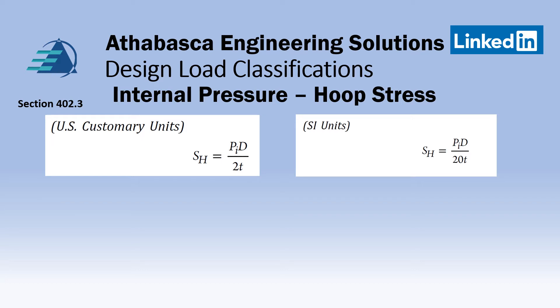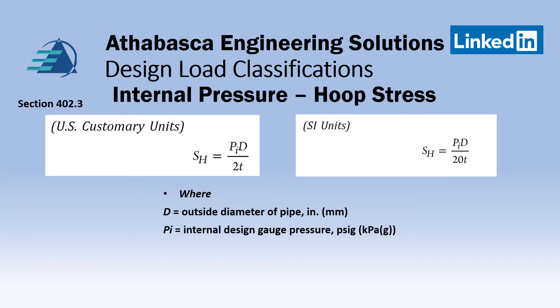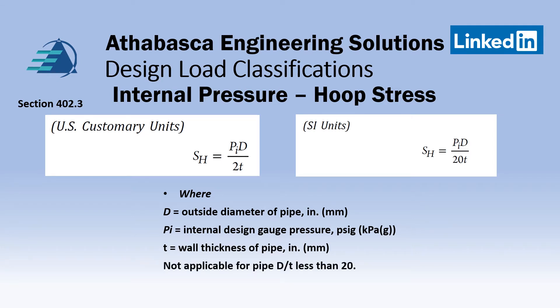Section 402.3 defines hoop stress from classical equations as the outside diameter of the pipe times the internal gauge pressure, divided by the wall thickness, divided by two. Two equations are shown — one for customary units and one for SI units. Note that these equations are based on classical equations for thin-walled membranes. There are two sets of rules — thick walls and thin walls — so when D over T is less than 20, these equations are not applicable.